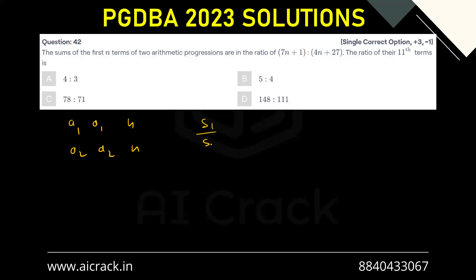So S1 upon S2 is given as 7n plus 1 divided by 4n plus 27. Now S1 would be n by 2,